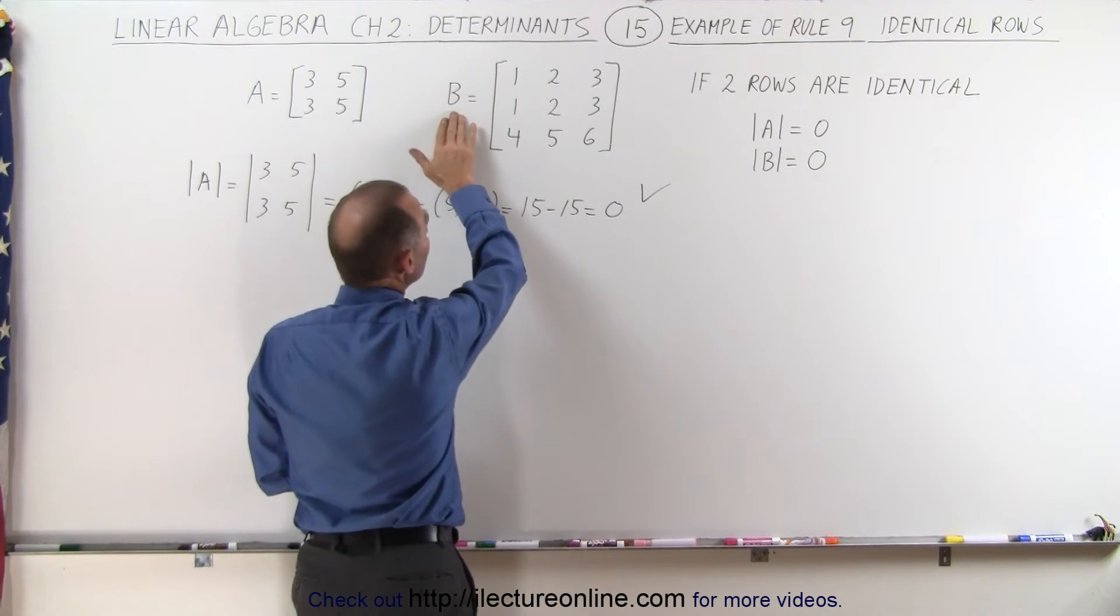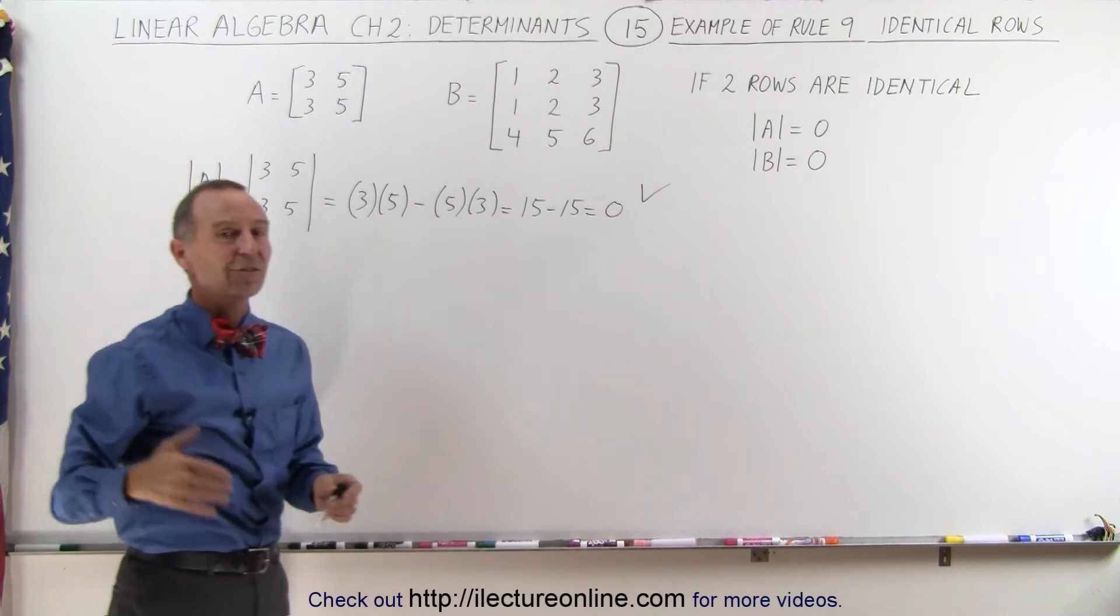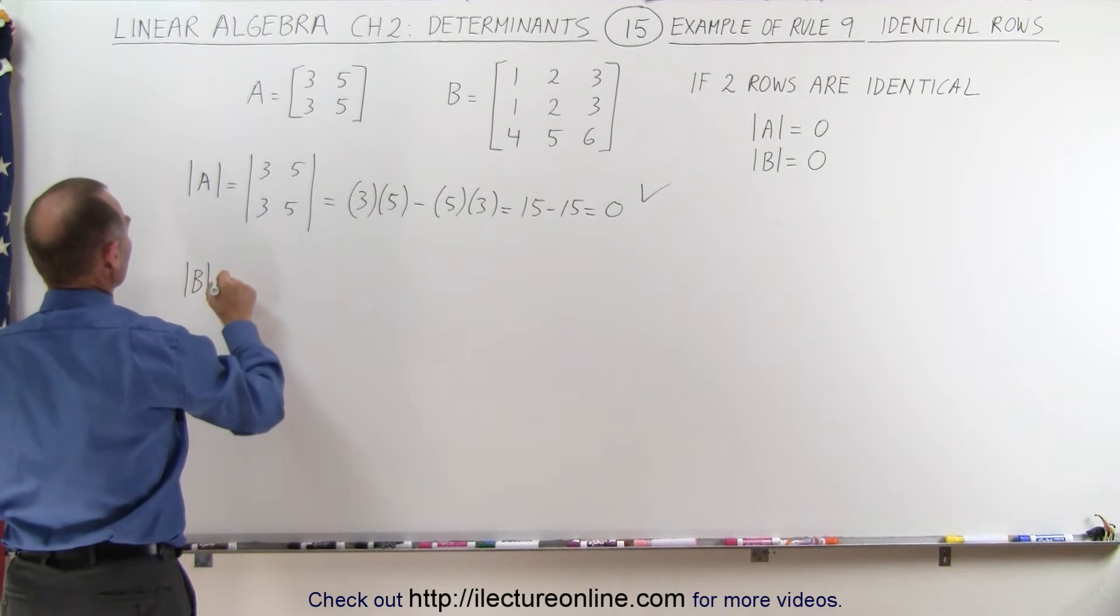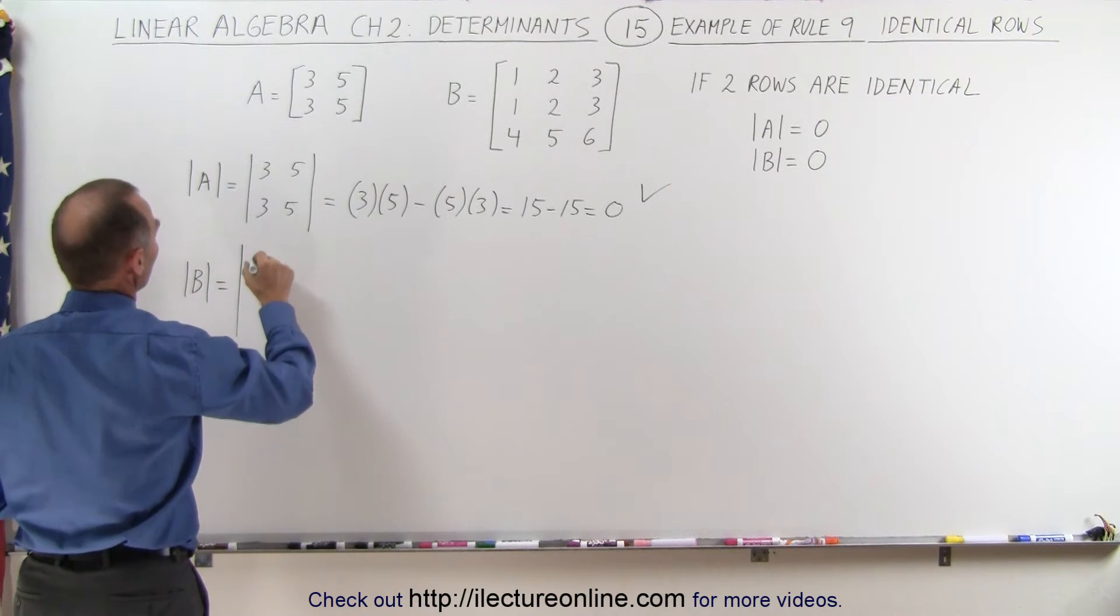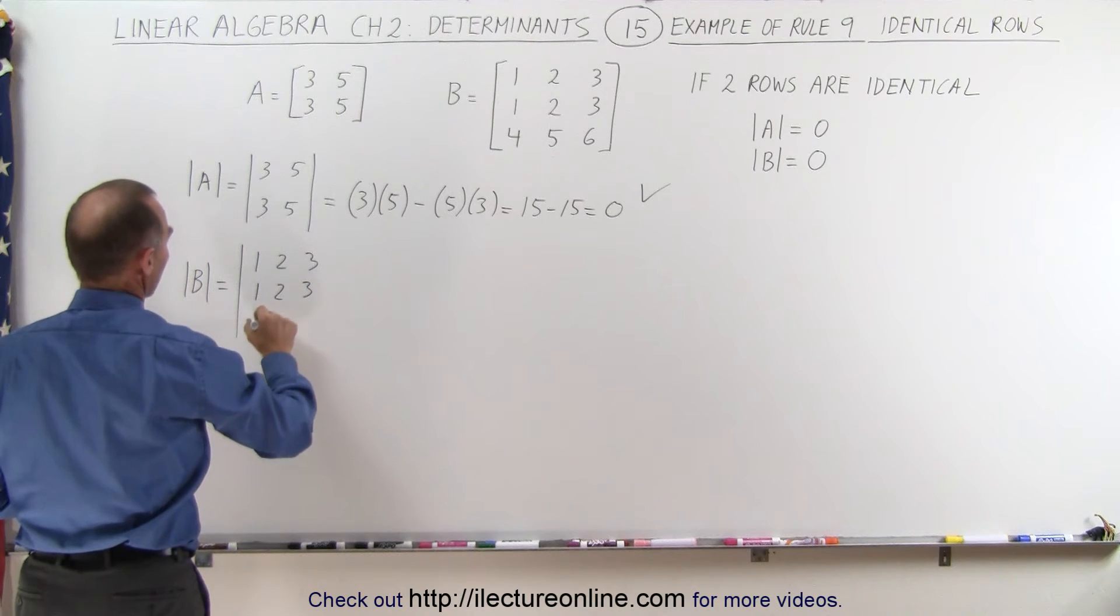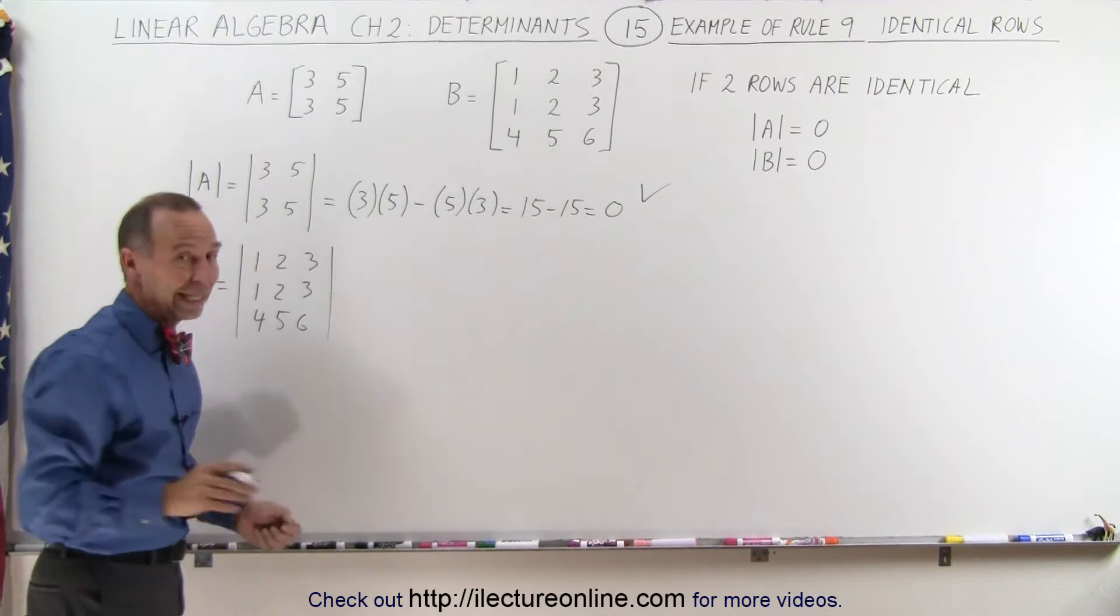Here we have matrix B. You can see that it has two rows that are identical to one another. Let's find the determinant of that matrix. Here's the determinant of matrix B which is equal to 1 2 3, 1 2 3, and 4 5 6 for the three rows, two of them of course being identical.